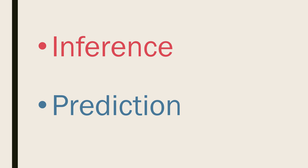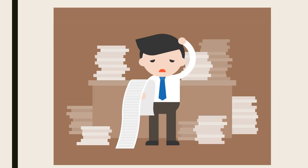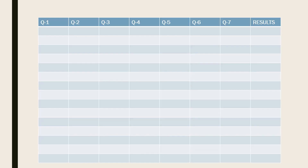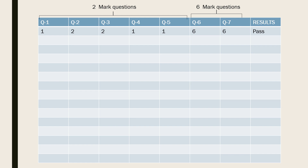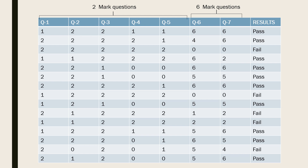Now, let us understand these terms with a simple example. Suppose that you have an exam. You somehow manage to get some previous question papers and answer sheets, and you start analysing them. You prepare a table stating question numbers and results. You write the marks a student gets in each question in the questions column and the result in the results column. On creating more rows for each answer sheet, you get the following dataset.